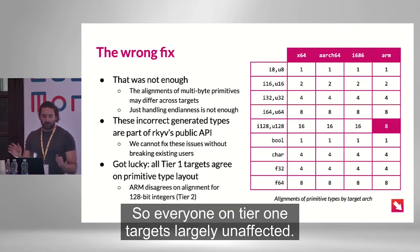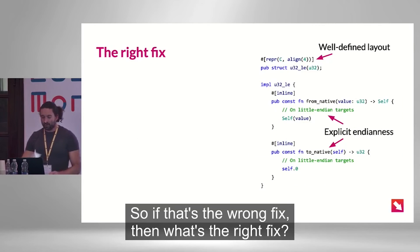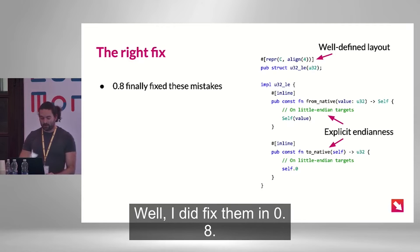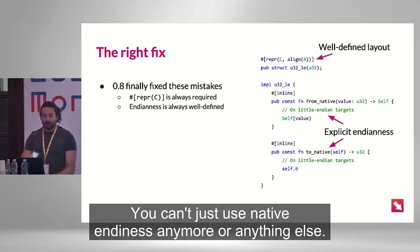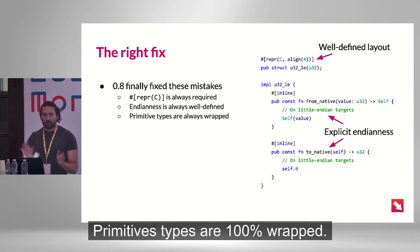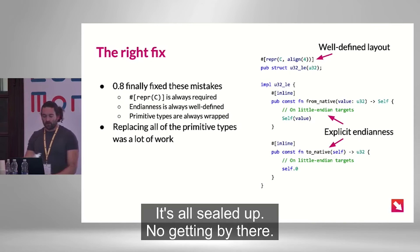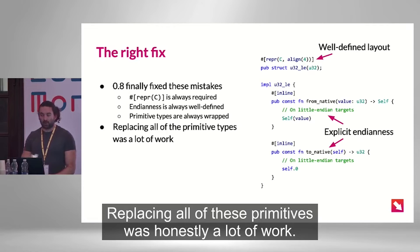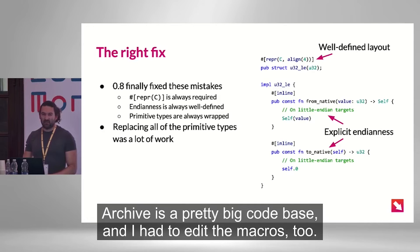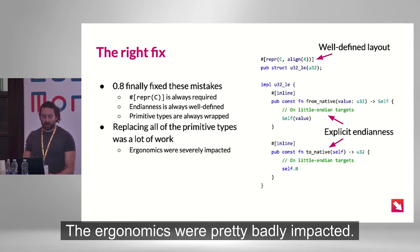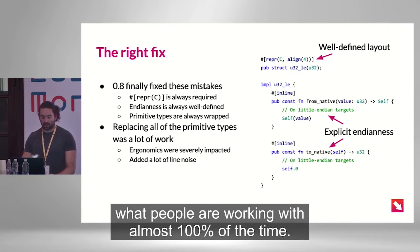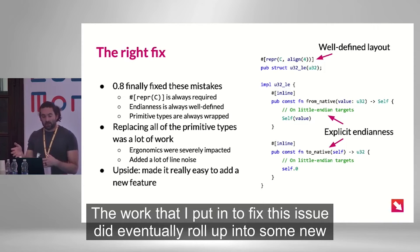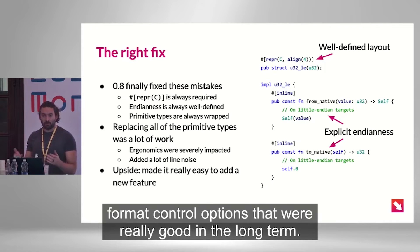Not only did Archive have unstable layouts, but the most stable you could get was opt-in — and I learned the hard way that's not what most people want. Through a stroke of luck, all the tier-one targets just happened to agree that the layouts of all their primitives are exactly the same. But as soon as you drop down to tier two, ARM comes in with eight-aligned 128-bit integers. So in 0.8, I fixed this. Now repr C is always required. Endianness is always very strongly defined. Primitive types are 100% wrapped. Replacing all of these primitives was honestly a lot of work, but there is a silver lining: the work eventually rolled up into some new format control options that were really good in the long term.